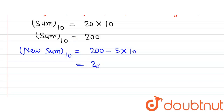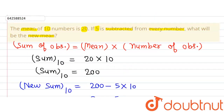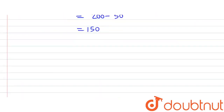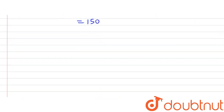So the new sum will be 200 minus 50, which equals 150. This is the new sum. Using this we can find out the new mean.